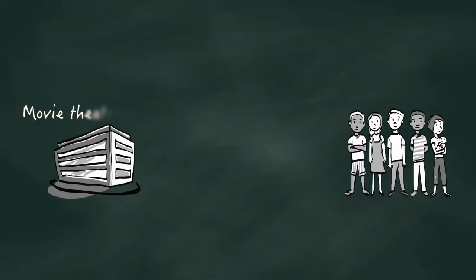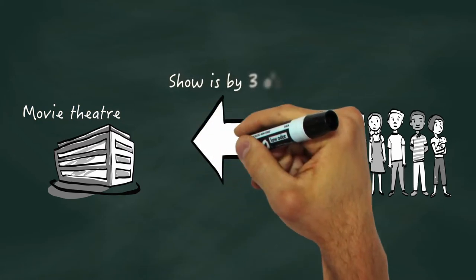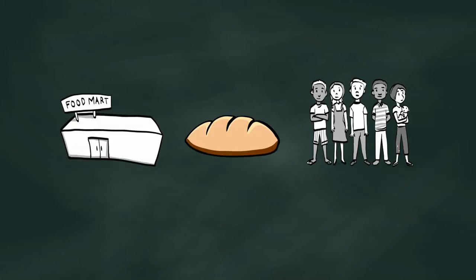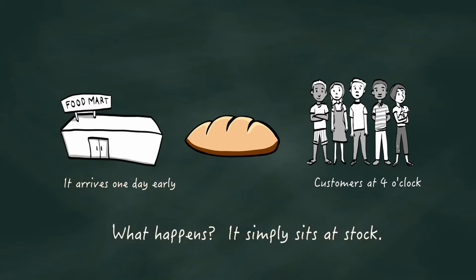Consider a movie. Ten of you want to go for the movie. The movie happens to be at three o'clock and you reach at two o'clock. What happens? All of you have to sit and wait for one hour. Pretty much a waste. On the other hand, consider a bakery. They are expecting a lot of buns for customers at four o'clock, and let's say it arrives one day early. What happens? It simply sets a stock. Don't you think this is a waste?